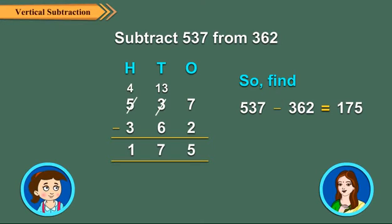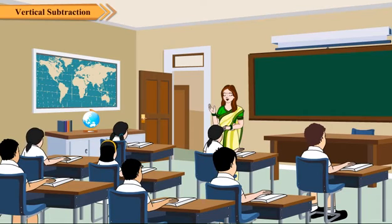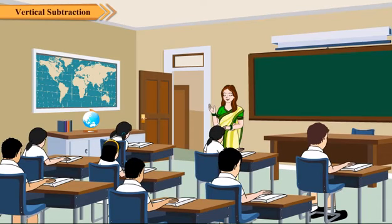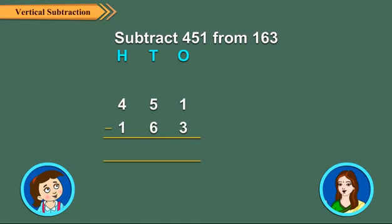Children, so far you have seen examples of regrouping 10's to 1's and 100's to 10's. Now, we take an example in which we have to regroup both 10's to 1's and 100's to 10's. Let us find 451 minus 163.